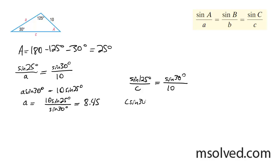C sine 30 degrees is equal to 10 times the sine of 125, and C is equal to 10 sine of 125 over sine of 30, which gives me 9.86.